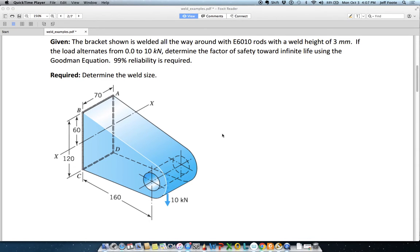Example 2 uses the same geometry and the same welding rod as example 1. We just have a load that now alternates from 0 to 10,000 newtons. So the maximum load is the same as the static load of the previous problem, but it is a varying load from 0 to that value.